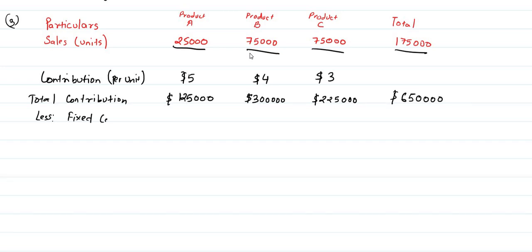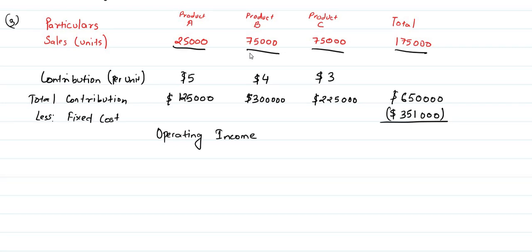We subtract the fixed cost of $351,000 from the new total contribution of $650,000. This gives us a new operating income of $299,000.